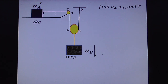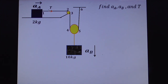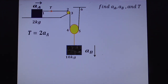First, write the equation for mass A, the 2 kg block. Only one string is attached with this mass, so tension T acts on it. Applying Newton's second law, F = MA: the only force is T, so T = 2·A_A. This is equation number one.